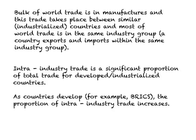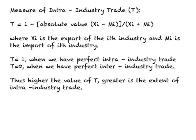Intra-industry trade is a significant proportion of total trade for developed countries, and as developing countries develop over time — for example, BRICS — this proportion also increases for them. To measure intra-industry trade we use the symbol T, given by the formula: T equals 1 minus the absolute value of Xi minus Mi, divided by Xi plus Mi, where Xi represents exports of the i-th industry and Mi represents imports of the i-th industry.